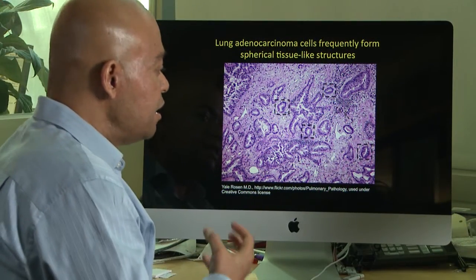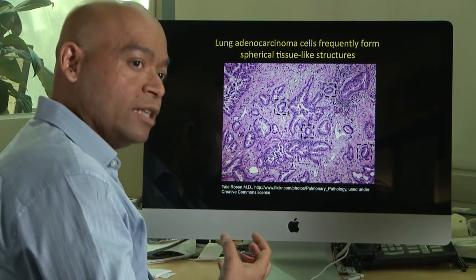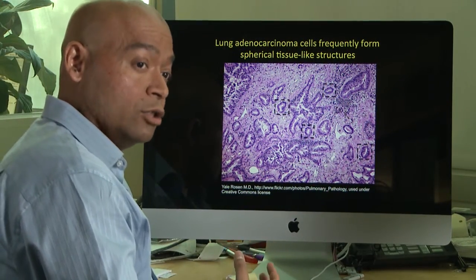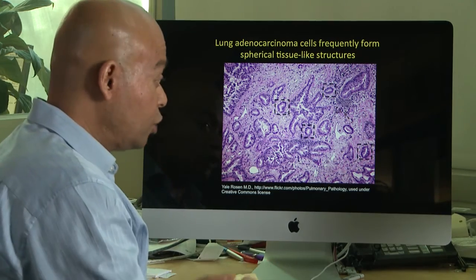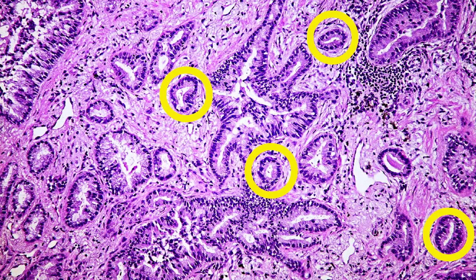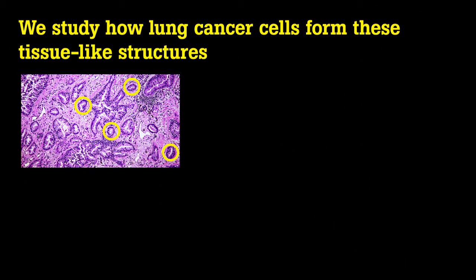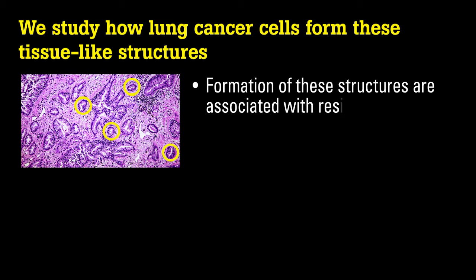This is typically the architecture of lung adenocarcinomas — they actually form these polarized balls of cells. The main reason we are interested in this is that formation of this polarized spherical architecture is associated with resistance to traditional chemotherapy drugs.